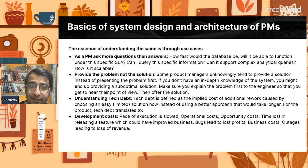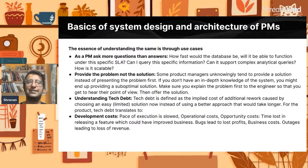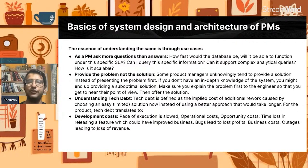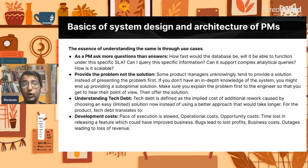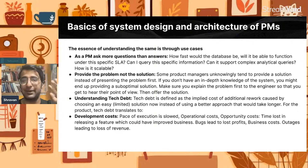This is something you should understand fundamentally as a PM. As a PM, you will do four things when interacting with tech: Number one, ask more questions than answers. Second, provide the problem, not the solution — always ask them, this is my problem, how will you solve it? Third, understand tech debt — if somebody says a solution will take three weeks, ask if we can do it in one week, accepting there may be a sub-optimal solution. Fourth, understand the value of development costs — how much time will it take to execute and take it to market?